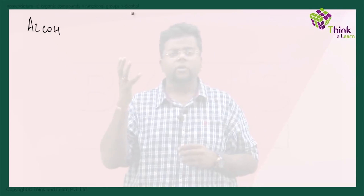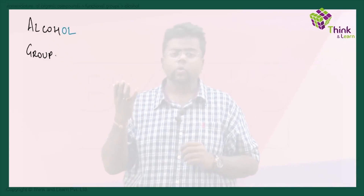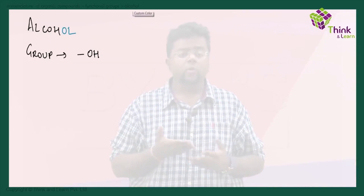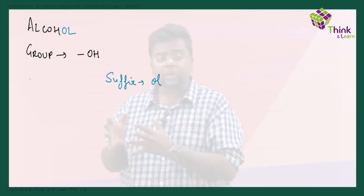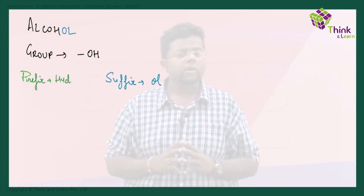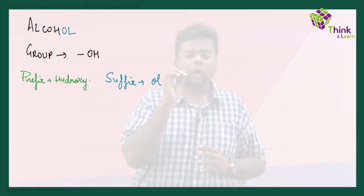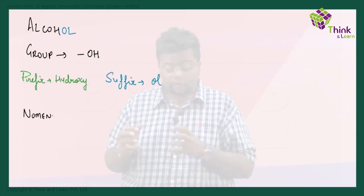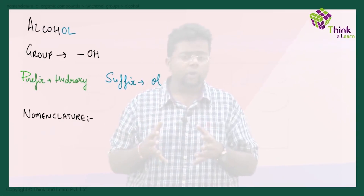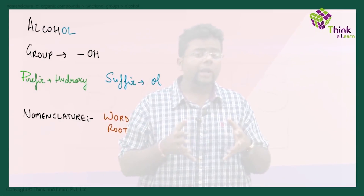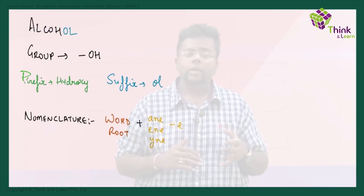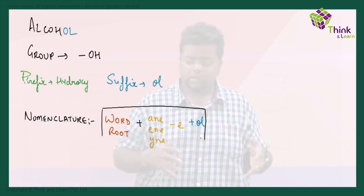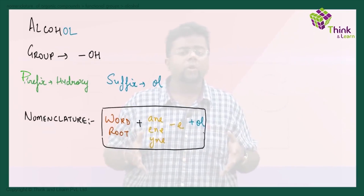The first functional group we have is alcohols. The group for alcohol is OH. The suffix would be -ol and the prefix would be hydroxy. For the nomenclature, you use the word root, then add -ane, -ene, or -yne, subtract the -e, and add -ol. That would be your nomenclature.